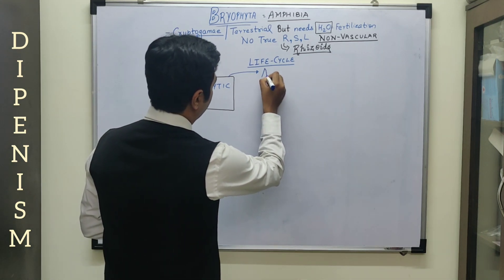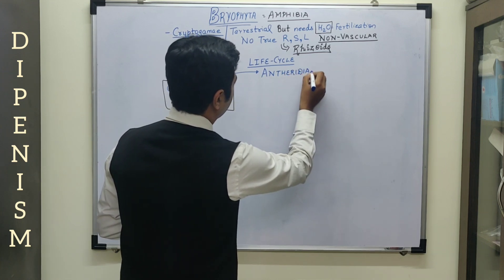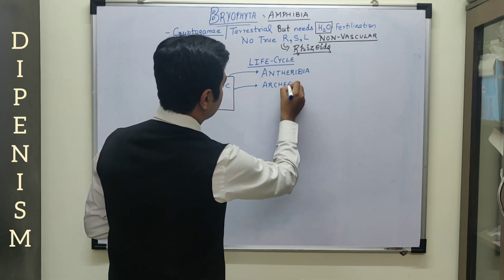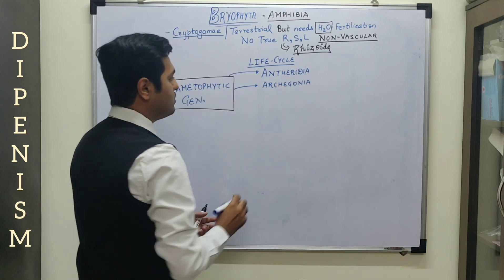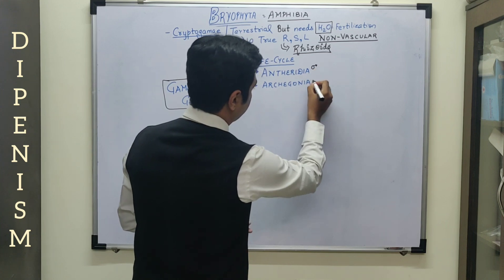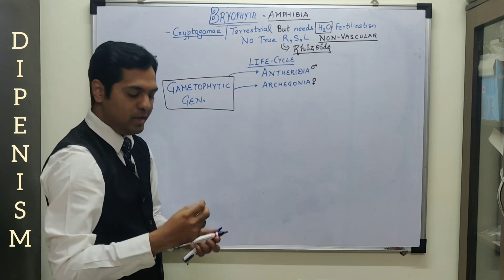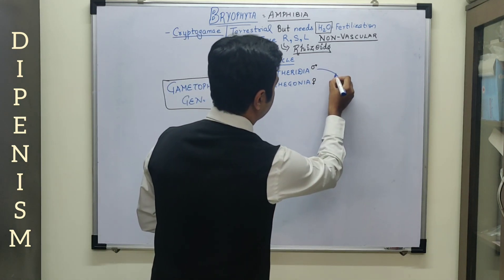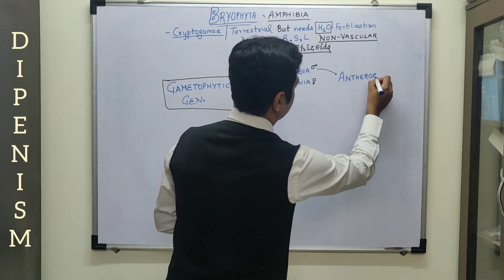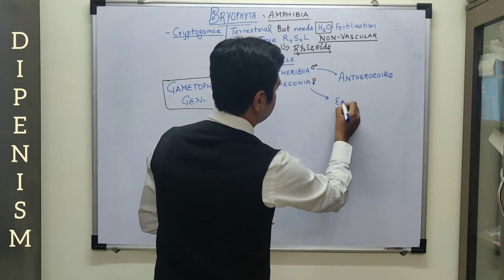From the leaf-like structures, there is arisal of gametophytic structures, wherein there is a male gametophyte which is the male sex organ — that is the antheridia. And there is also a female sex organ which is known as the archegonia. These are the male and female sex organs. The antheridia, that is the male sex organ, produces the male gametes which are known as anthrozoids. Whereas the female sex organ is going to produce the female gamete that is the egg.